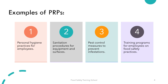Some examples of PRPs are personal hygiene practices for employees such as handwashing and proper attire, sanitation procedures for equipment and surfaces, pest control measures to prevent infestations, and training programs for employees on food safety practices.